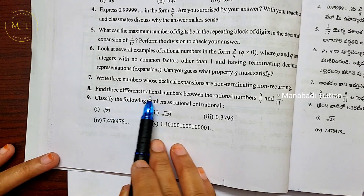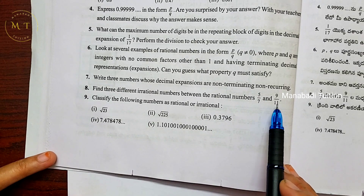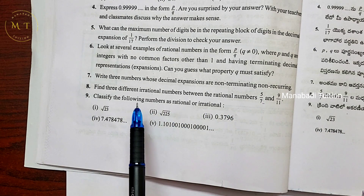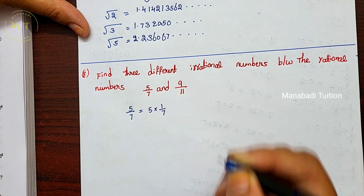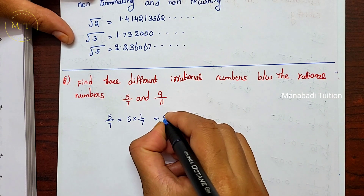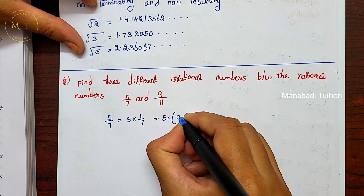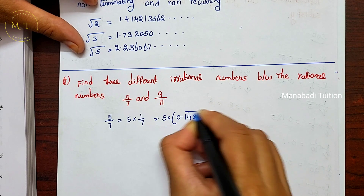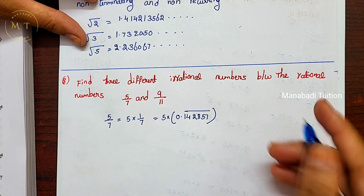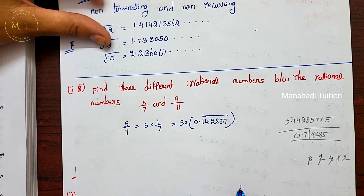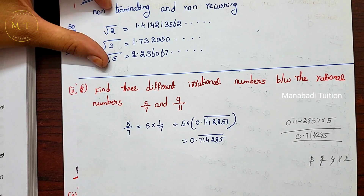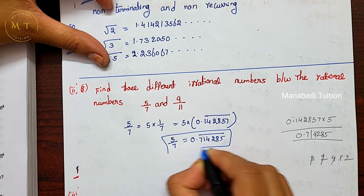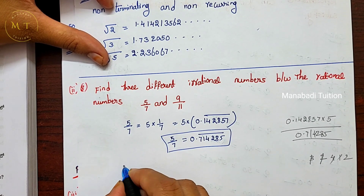Question 8: Find 3 different irrational numbers between the rational numbers 5 by 7 and 9 by 11. First, let's convert 5 by 7 to decimal form. We can write 5 by 7 as 5 × (1 by 7). The value of 1 by 7 from the textbook is 0.142857 bar. Multiplying by 5 gives 0.714285 bar.